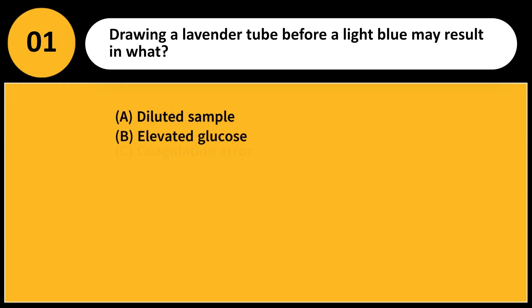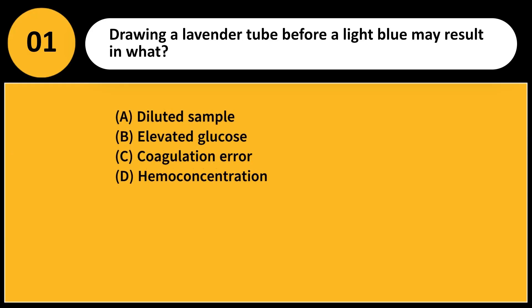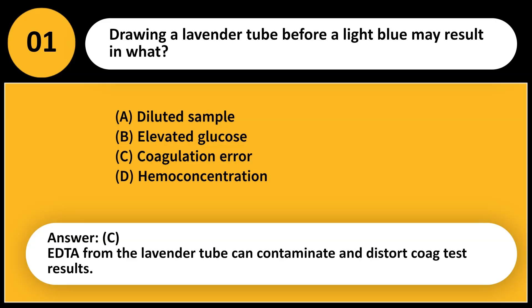Drawing a lavender tube before a light blue may result in what? A. Diluted sample. B. Elevated glucose. C. Coagulation error. D. Hemoconcentration. Answer: C. EDTA from the lavender tube can contaminate and distort coagulation test results.